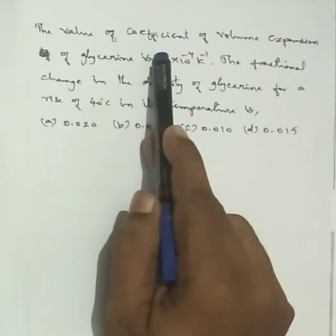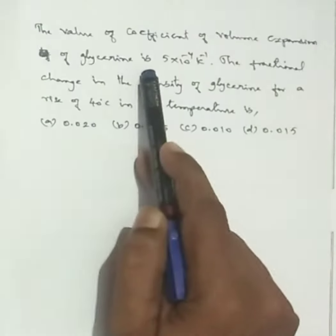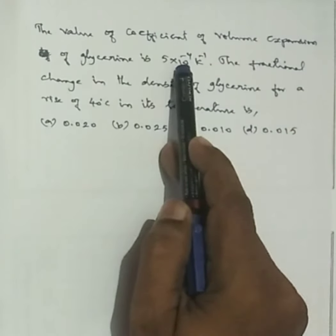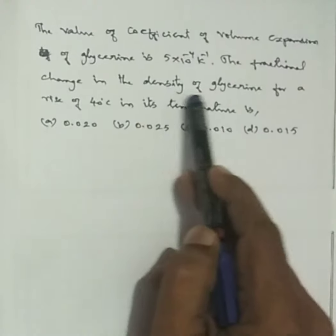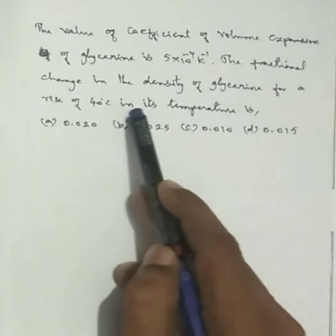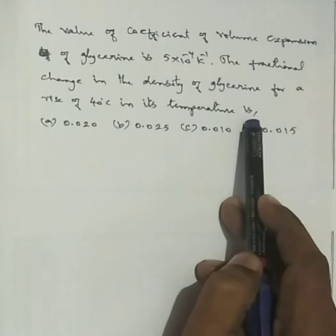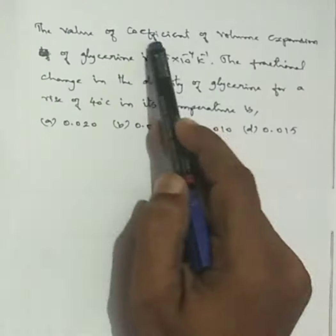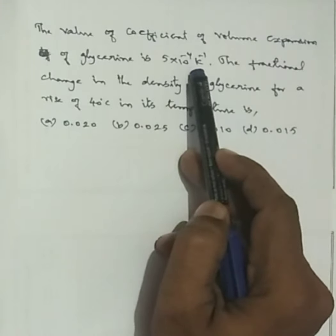The coefficient of volume expansion of glycerin is 5 into 10 to the power minus 4 per Kelvin. We need to find the fractional change in the density of glycerin for a rise of 40 degrees Celsius in its temperature.